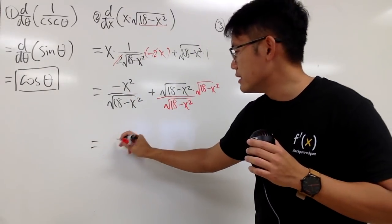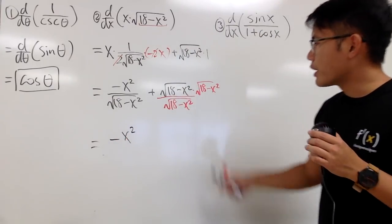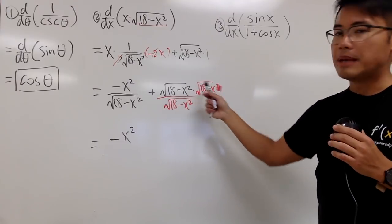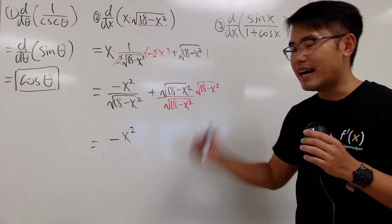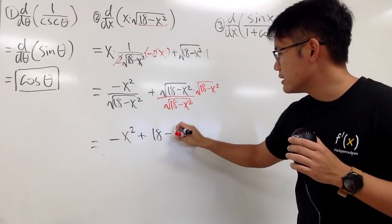Then, we see that on the top, this is negative x squared. And then, for the second part right here, square root of this times square root of that, same thing inside. So, I just get it inside. So, we add 18 minus x squared,